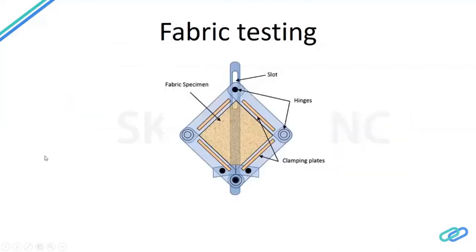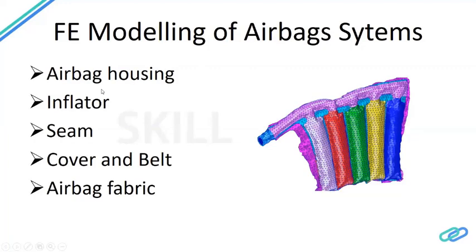A basic airbag system consists of an airbag housing, an inflator, a seam, a cover, a belt, and most importantly the airbag fabric itself. The airbag housing is generally a plastic component; it's important to model it with plastic properties — not as rigid — because the deformation of the plastic affects pressure distribution and the unfolding behavior of the airbag. Since it is a thin layer, it is modeled with 2D shell elements.